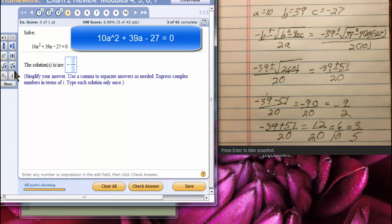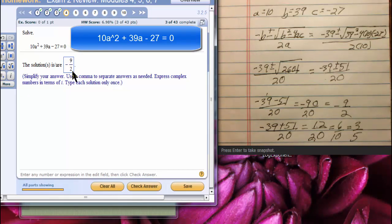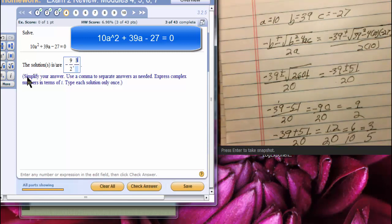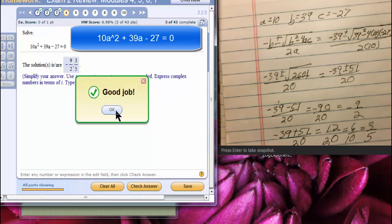Let's keep it happy. Negative 9 over 2, comma, fraction tool, 3/5. Ah, bravo for us.